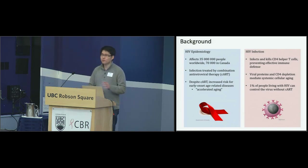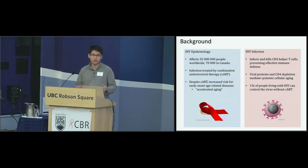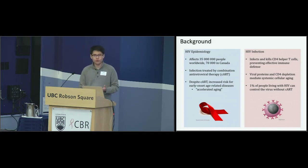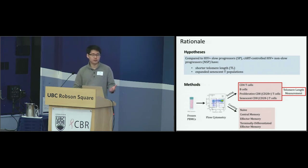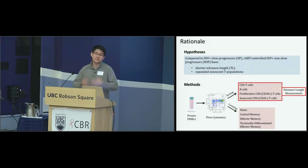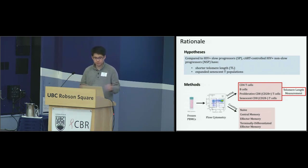It turns out that one percent of people who live with HIV are slow progressors, meaning they don't need antiretrovirals to survive. They're able to maintain a high CD4 count and, with varying degrees of success, control viremia. It's unknown whether, because these slow progressors are naturally able to control HIV, they'd also be protected against those accelerated aging effects. Our hypothesis was that slow progressors would show less severe aging phenotypes — meaning non-slow progressors would have shorter telomere length and an expanded senescent T cell population.